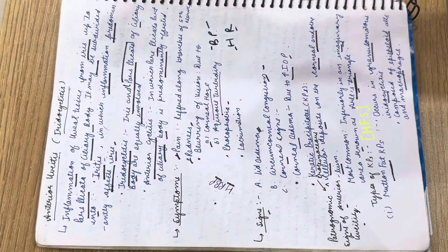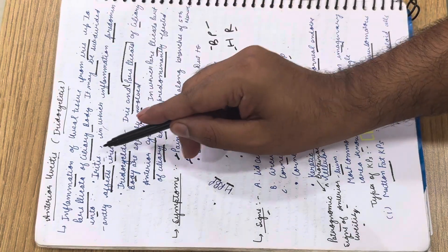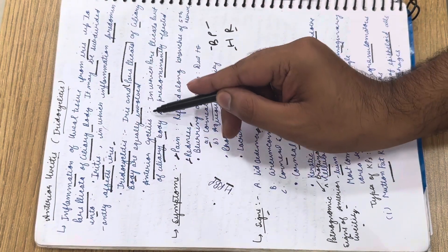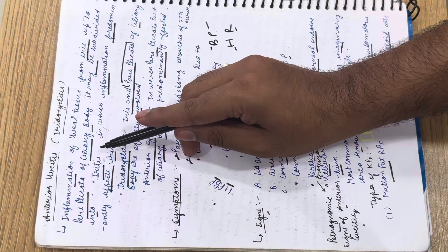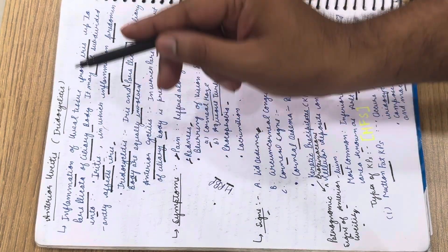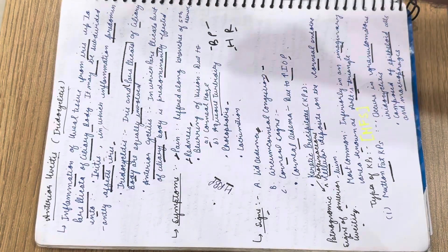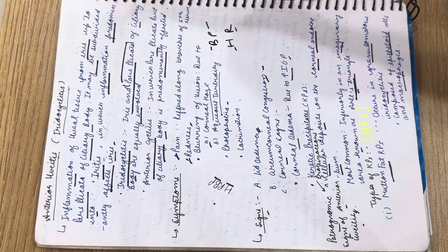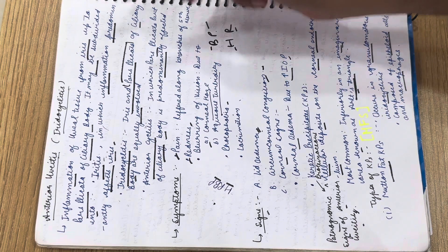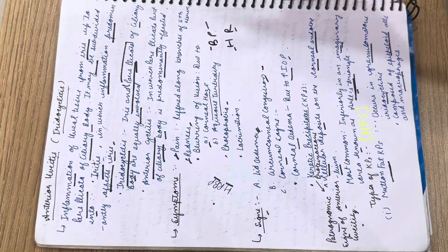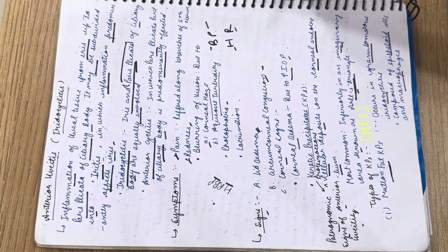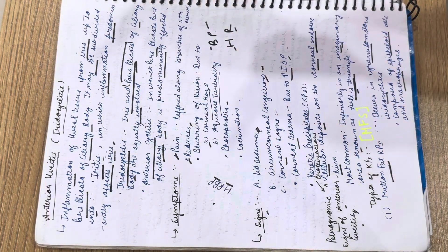It may be subdivided into iritis, iridocyclitis, and anterior cyclitis. Iritis affects the iris only. Iridocyclitis affects both the iris and the ciliary body, specifically the pars plicata. In anterior cyclitis, only the ciliary body is involved.